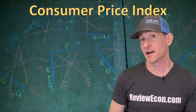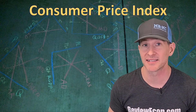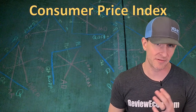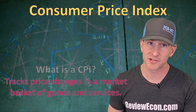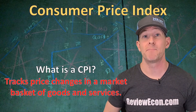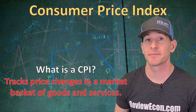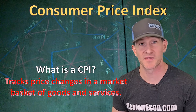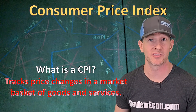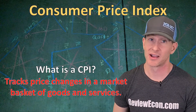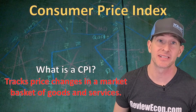The CPI, or Consumer Price Index, is the primary way that we measure inflation. The CPI tracks price changes in a market basket of goods and services. In the United States, that market basket is comprised of over 80,000 different goods that a typical urban household purchases — urban household meaning people living in and near cities.